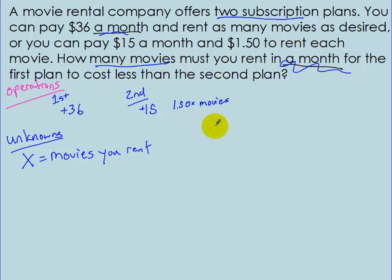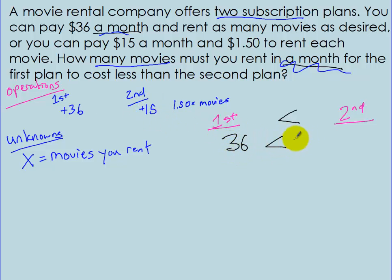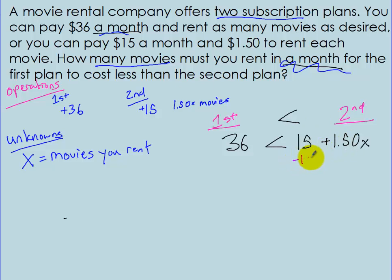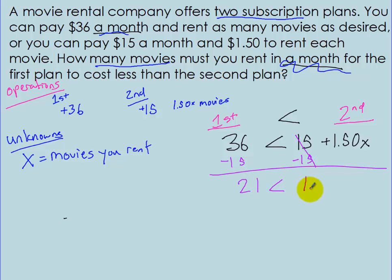On the first plan I pay $36 a month, so that's just $36. It's less than the second plan: $15 plus $1.50 times the number of movies, so $1.50x. That's my inequality: 36 < 15 + 1.5x. I subtract 15 on both sides and get 21 is less than 1.5x.